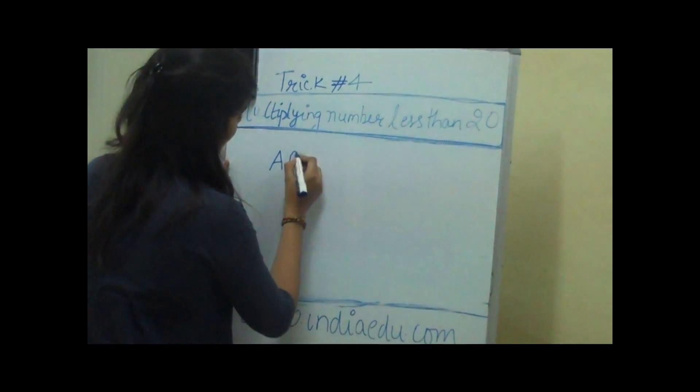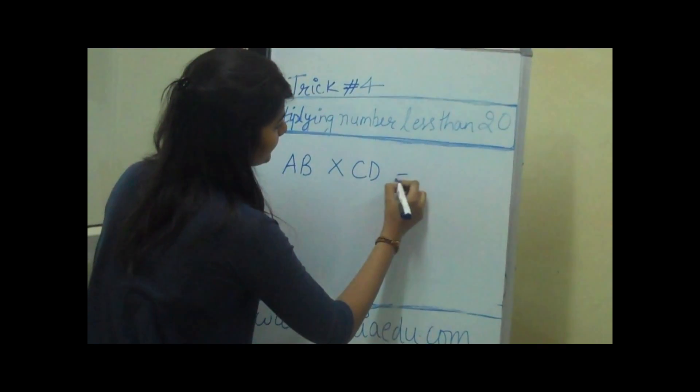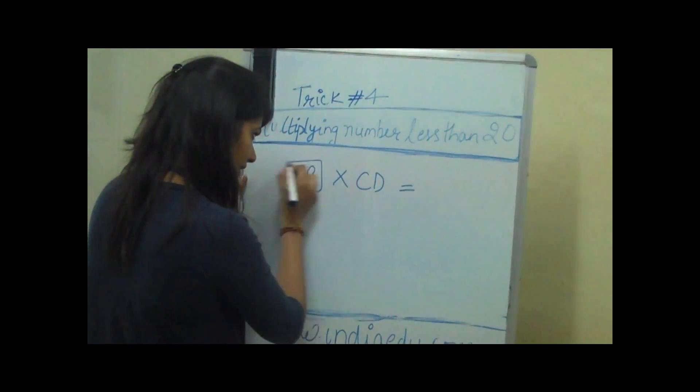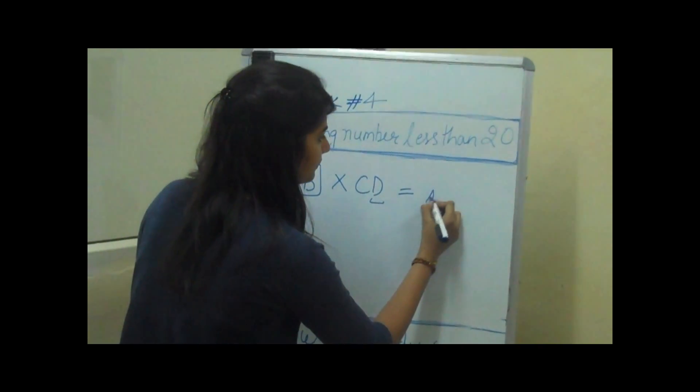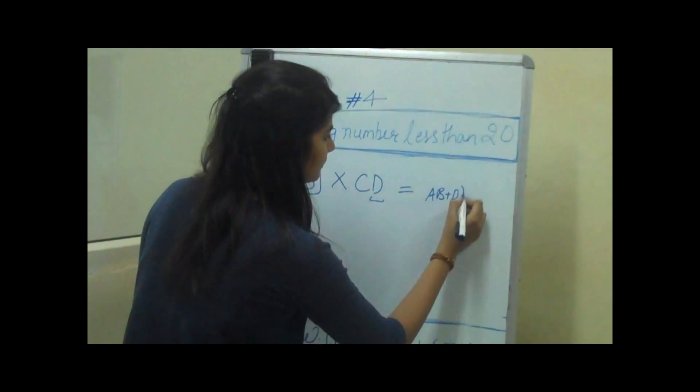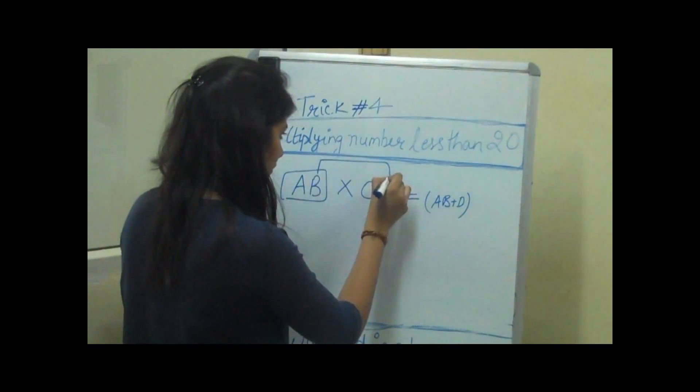If we have a number AB and we want to multiply it with CD, we will add this whole number to D and then we will multiply B with D.